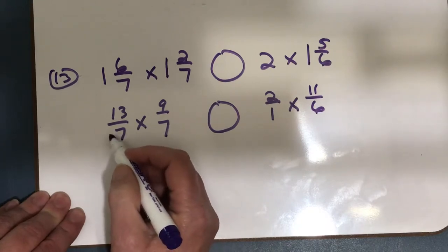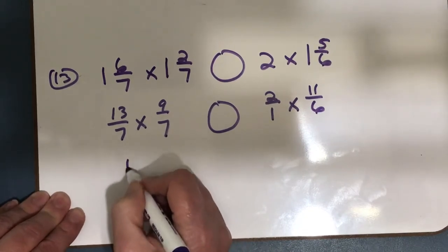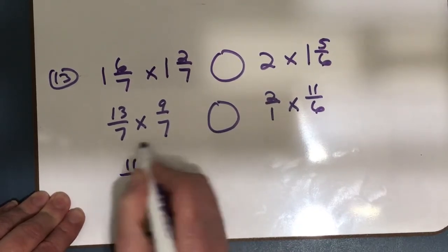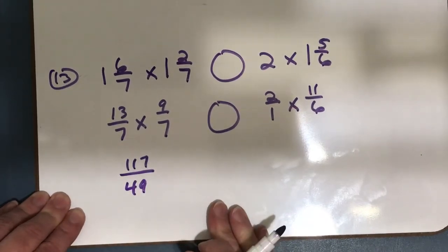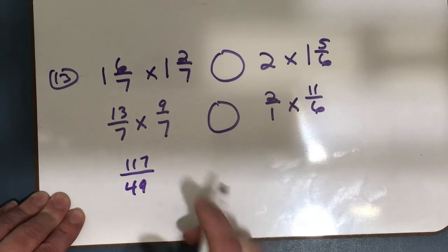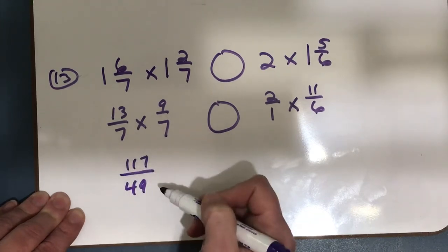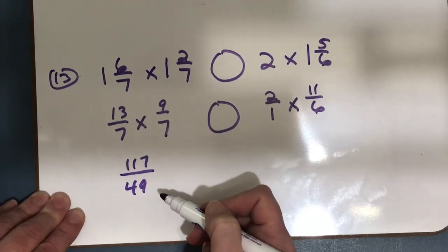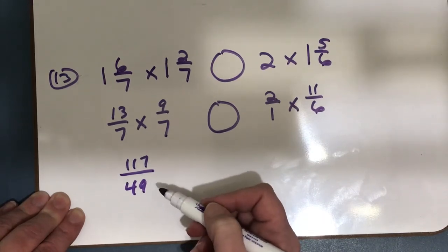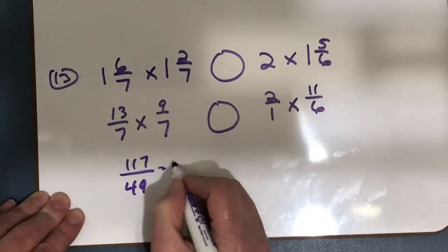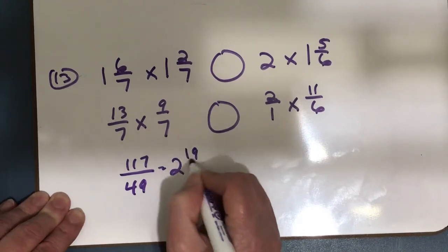Now I have to multiply both sides. 13 times 9 equals 117, 7 times 7 is 49. Because unfortunately I could not simplify anywhere on 13 sevenths or 9 sevenths. Both of my sevens are in the denominator. I have to have one number in the numerator and one in the denominator. So 117 over 49 equals 2 and 19 over 49.